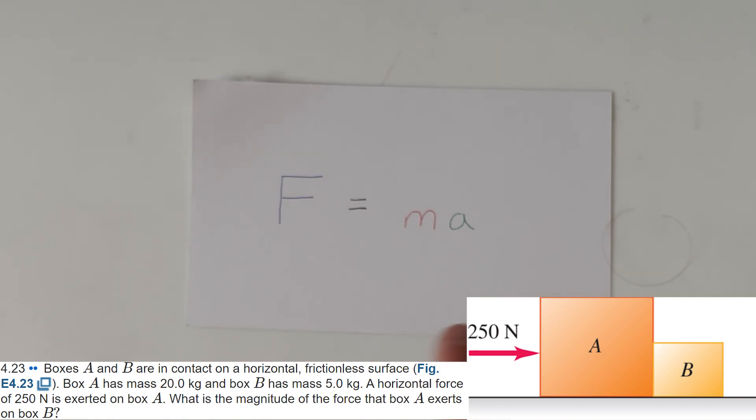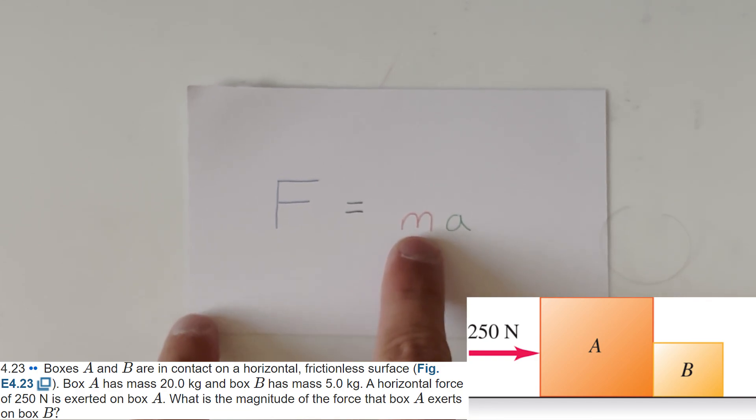So to do that, we're going to need to use this equation. Of course, we know the mass of block B is 5 kilograms. Then, if we want to find how much force is being exerted on block B, we need to find what that acceleration is.